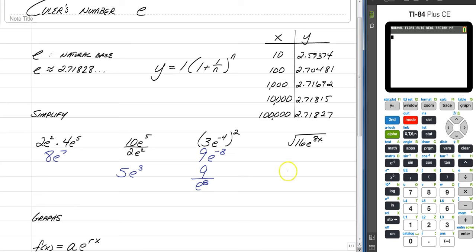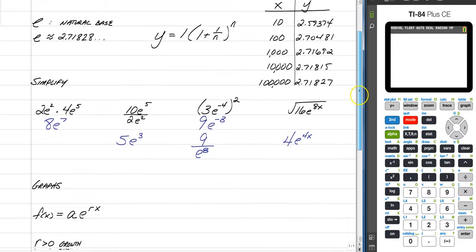And the last one, the square root of 16 is still 4, and the square root of e to the 8x is just e to the 4x, because we just take this and divide it by our index, which is 2. So, working with e is the same thing. But now, let's go talk about some other graphs.